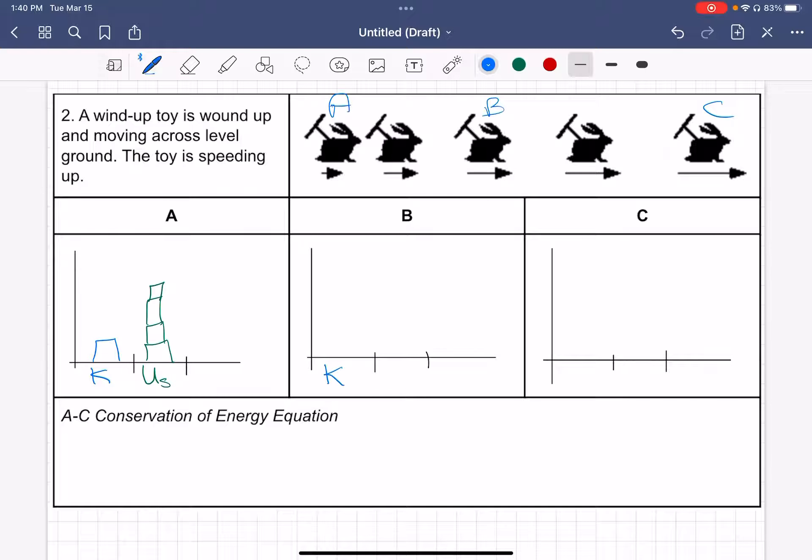So now when I think about this next point, point B, the toy has sped up. So I'm going to draw two blocks of kinetic energy. Because this toy is moving faster, it must have gained a little bit of kinetic energy.